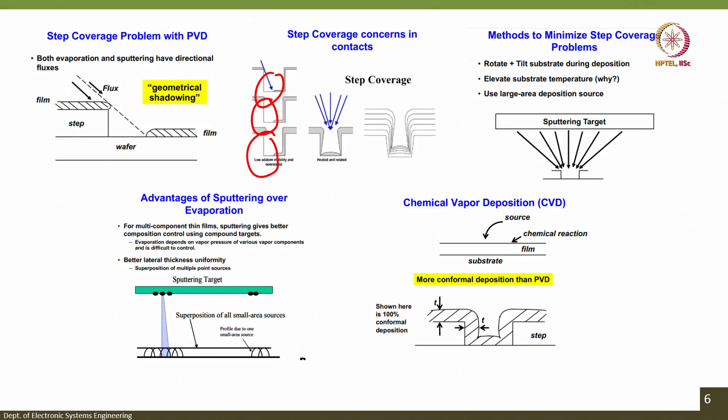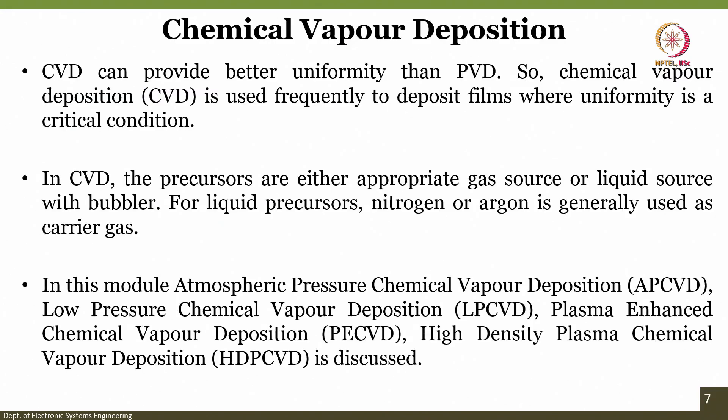When you talk about chemical vapor deposition, the conformability and step coverage are way better than PVD. That is because the film is formed using a chemical reaction at the substrate surface. CVD can provide better uniformity than PVD, and is used frequently to deposit films where uniformity is a critical condition.